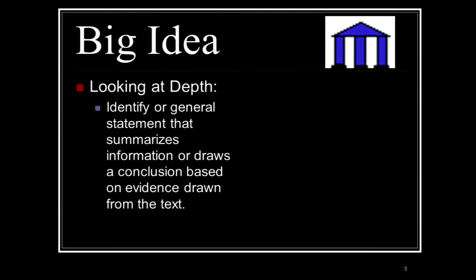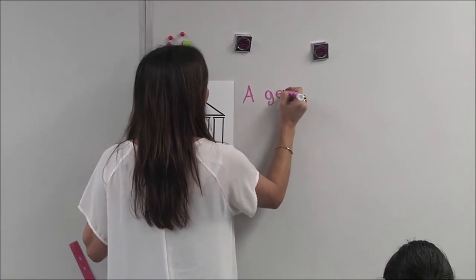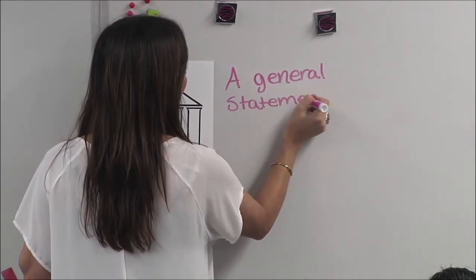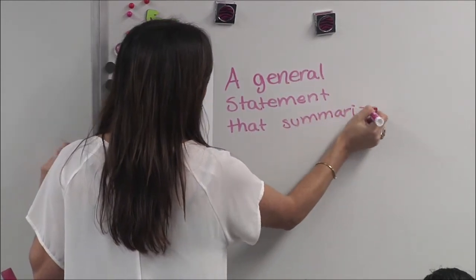So who can give me the key words you're going to put for big idea? A general statement — and what does it do? It summarizes, right? And you're drawing it from the text. So when I say the big idea of Shiloh may be animal rights or friendship, it's just a general statement — a general statement that summarizes the text. That's my easy notes to remember.